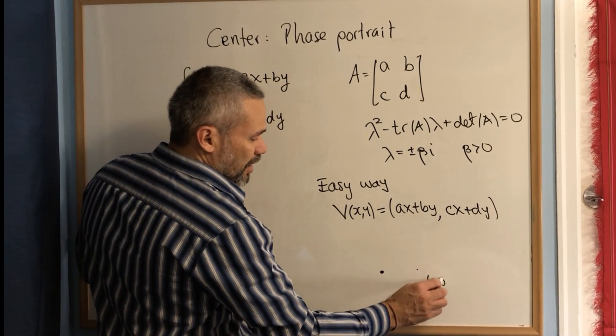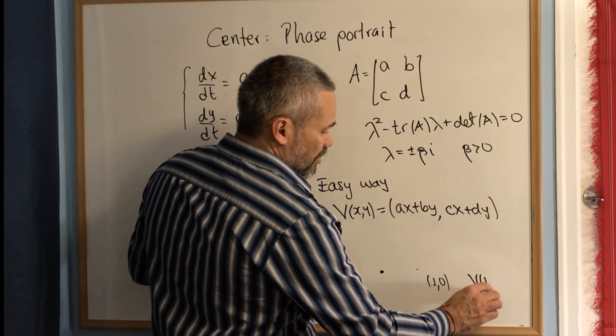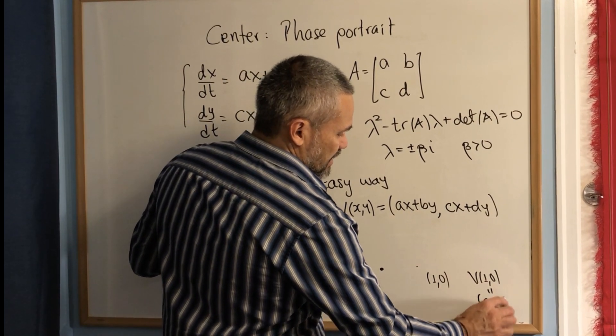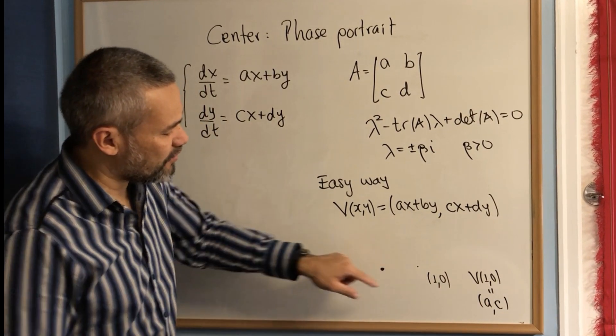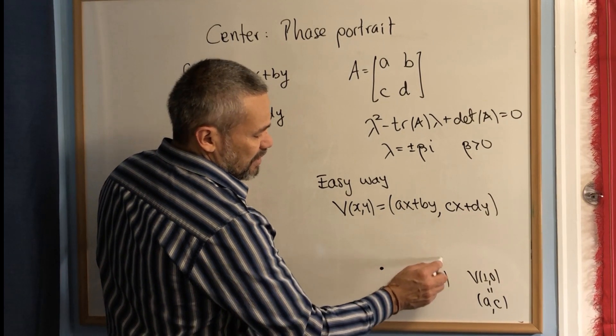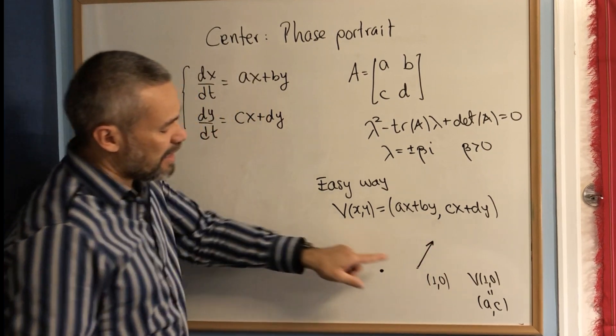When we evaluate V(1,0), we get V(1,0) = (a,c). Then we draw the vector (a,c). Let's suppose that a is positive and c is positive. That means in this case the vector goes like this.